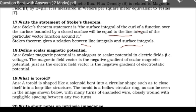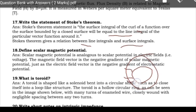Next: define scalar magnetic potential. The scalar magnetic potential is the quantity whose negative gradient gives the magnetic field vector. Also, a toroid is a ring-shaped specimen wound with conducting turns, forming a hollow circular link.